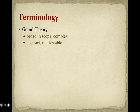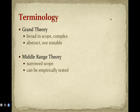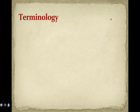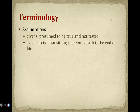A grand theory is broad in scope, very complex, but also abstract and not testable. Whereas a middle-range theory, or mid-range theory, is more narrow in scope and can be empirically tested. Let's look at some additional terminology.